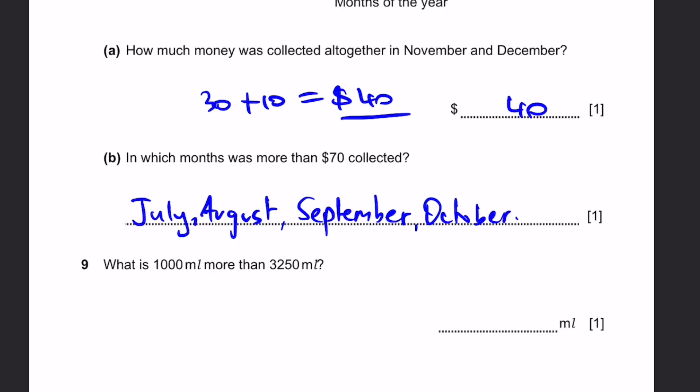Question 9. Write 1,000 ml more than 3,250 ml. That would be 3,250 plus 1,000, which equals 4,250 ml.